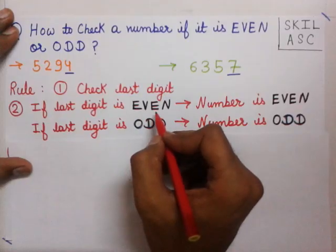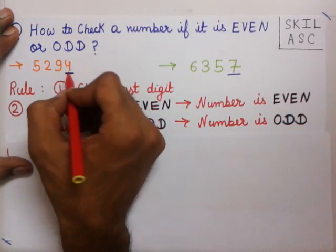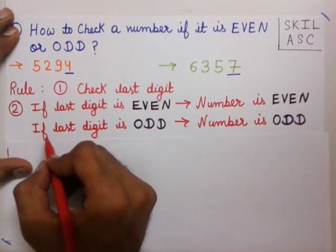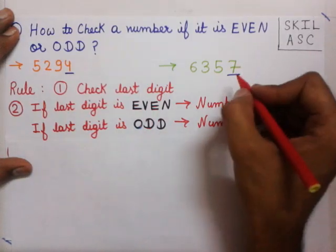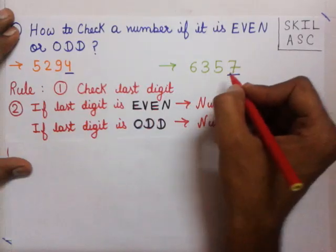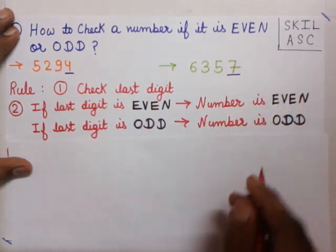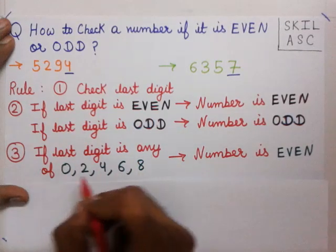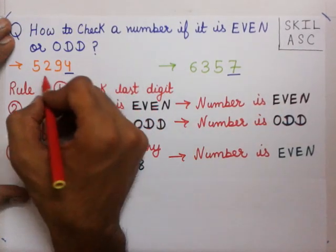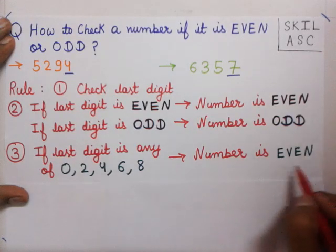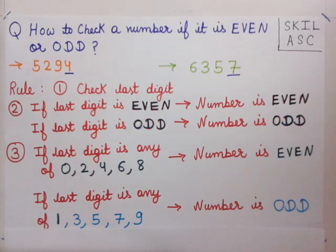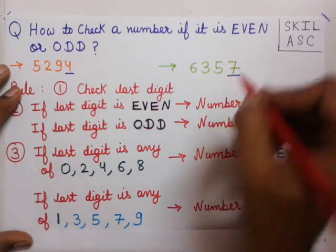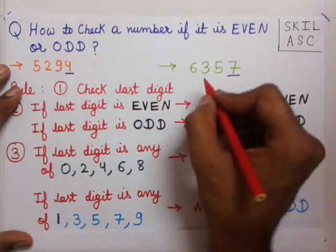If the last digit is even, then the number is even. In the number 5294, the last digit is 4, and 4 is an even number, so 5294 is an even number. If the last digit is odd, then the number is odd. In 6357, the last digit is 7, which is odd, so 6357 is an odd number. In other words, if the last digit is any of 0, 2, 4, 6, 8 the number is even; if it is any of 1, 3, 5, 7, 9 the number is odd.